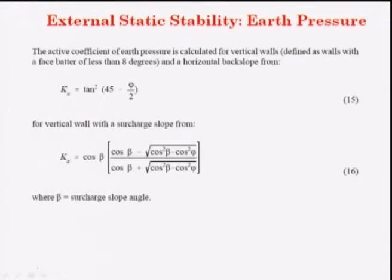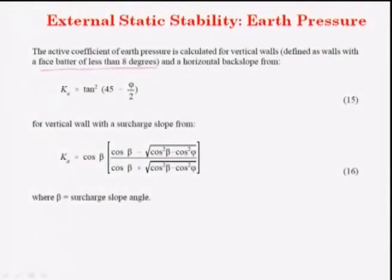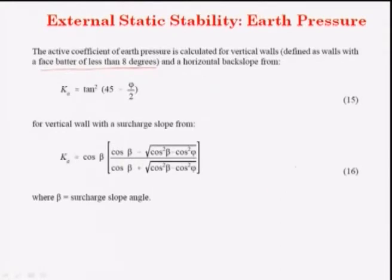The active coefficient of earth pressure is calculated for vertical walls, defined as walls with a face battered less than 8 degrees. If the face is inclined less than 8 degrees either way, it is defined as a vertical wall. A horizontal backslope means the soil retained behind the retaining wall is horizontal.